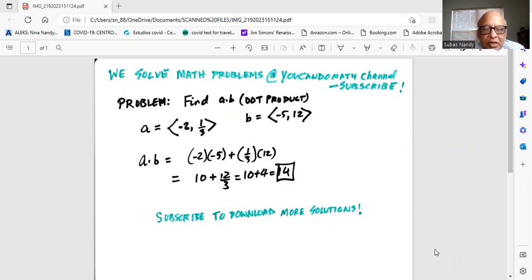So a dot b is negative two times negative five, plus one third times twelve. That's negative two times negative five - both negative - so it's 10 plus 12 over 3. 10 plus 4 is 14.